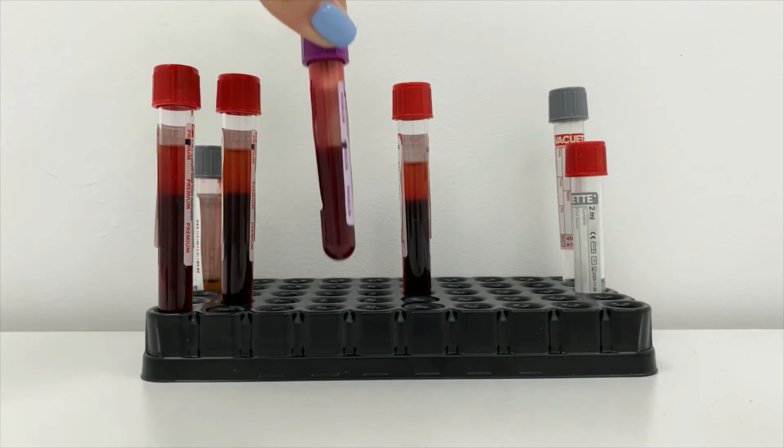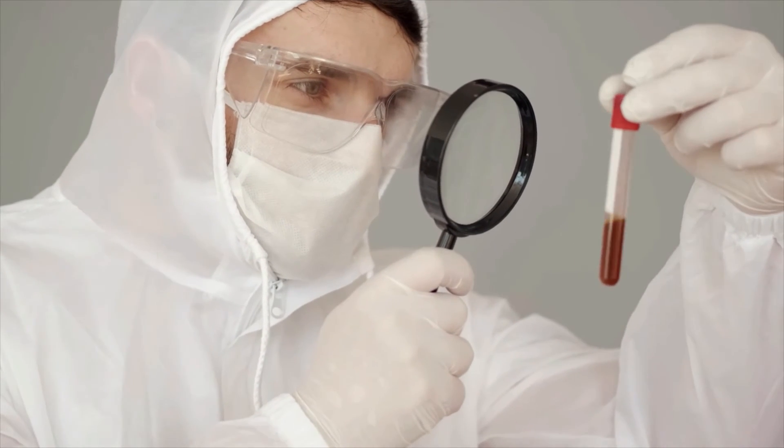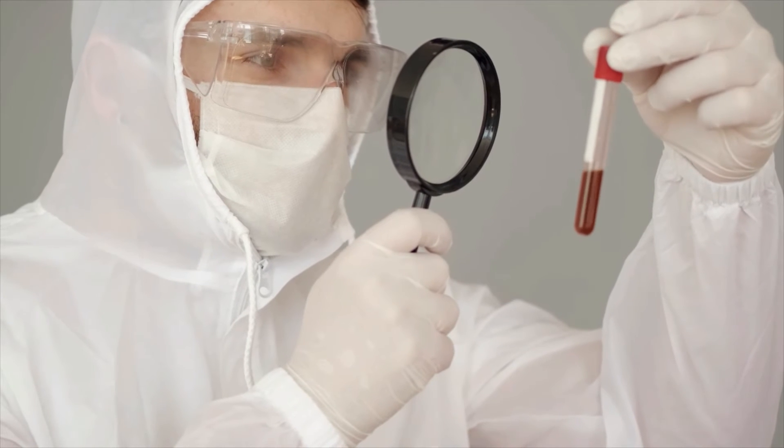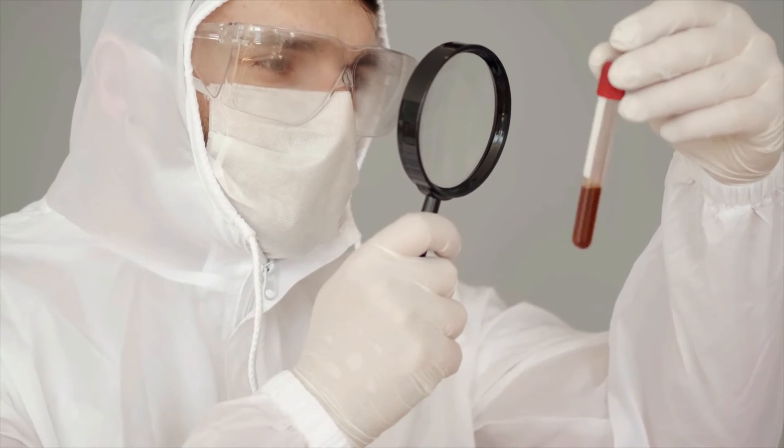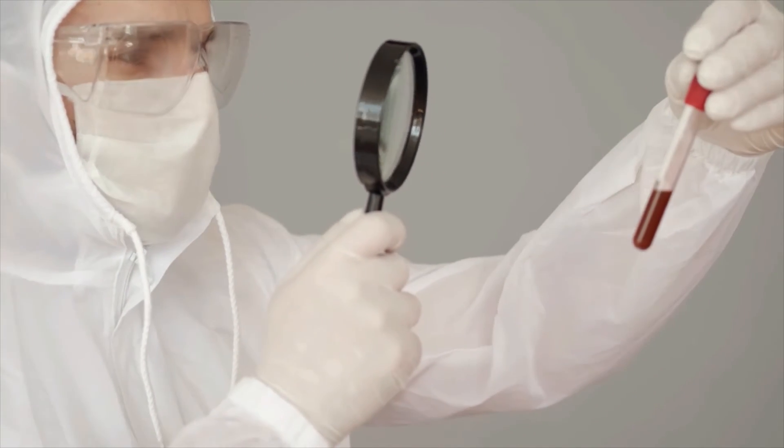Group AB has both A and B antigens in the red blood cells. However, its plasma doesn't have any anti-A or anti-B antibodies. As a result, people with type AB can get any blood type. Group O has plasma with both anti-B and anti-A antibodies. However, the red blood cells don't have A or B antigens. Because of that, anyone can receive this type of blood.